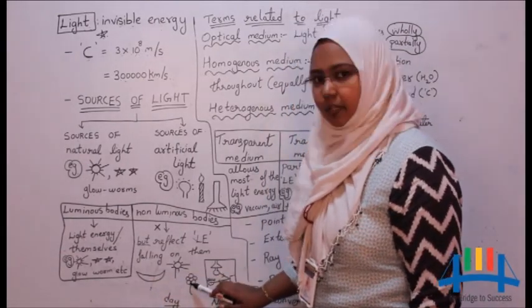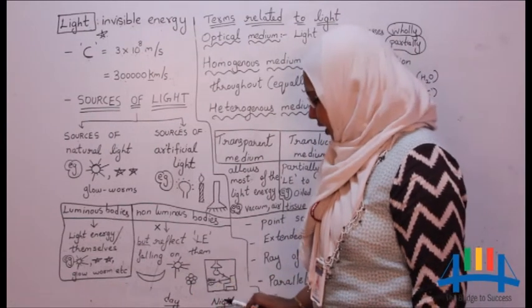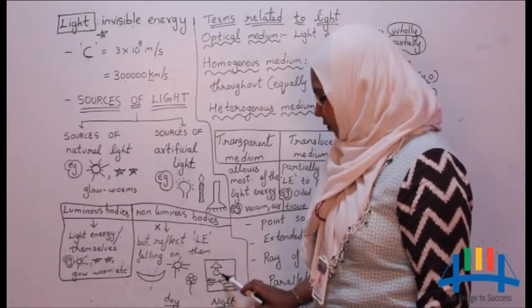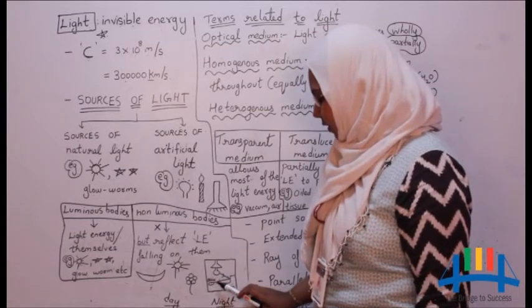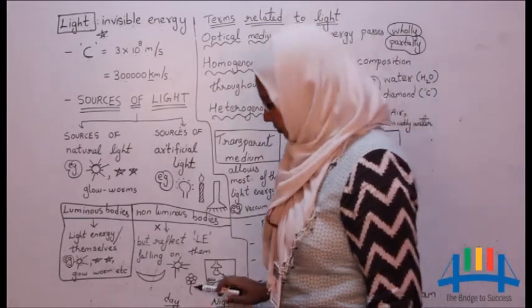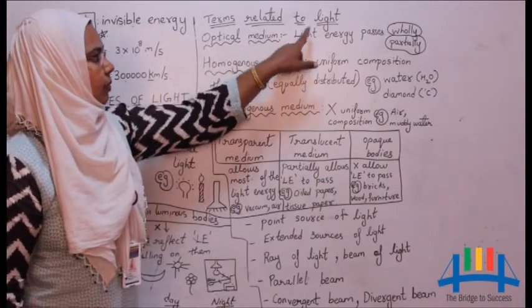We are able to see the flower in the daytime because it reflects the sun's light, and the chair in the night time because it reflects the bulb light and reaches our eye. Now let us discuss few terms related to light.